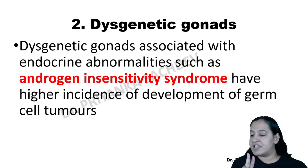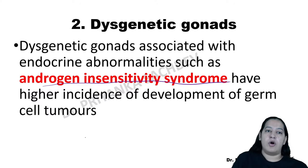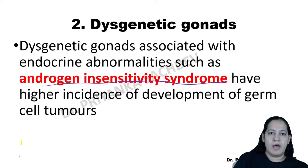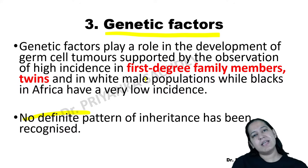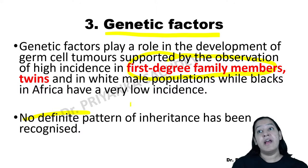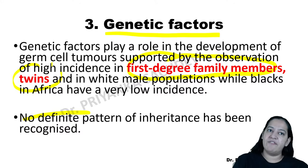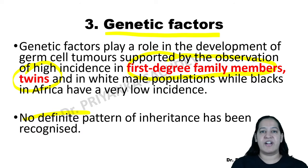The second risk factor is dysgenetic gonads — the most important condition being androgen insensitivity syndrome, which carries a high risk of testicular tumor. The third is genetic factors: though the specific gene is not yet discovered, family history and high concordance in monozygotic twins indicate a genetic component. The fourth is orchitis — past infection such as mumps in the testis can increase carcinogenesis.